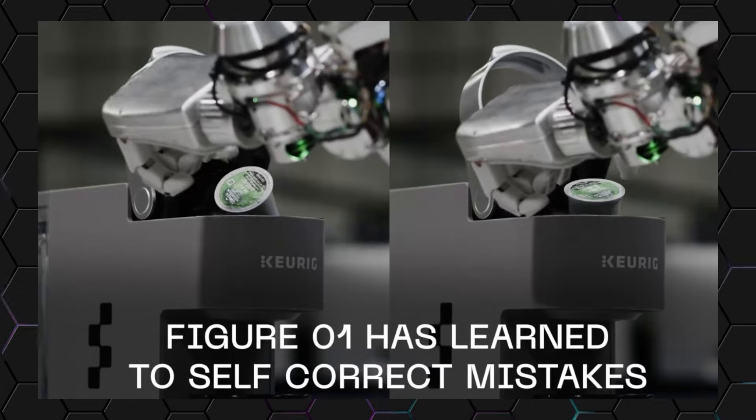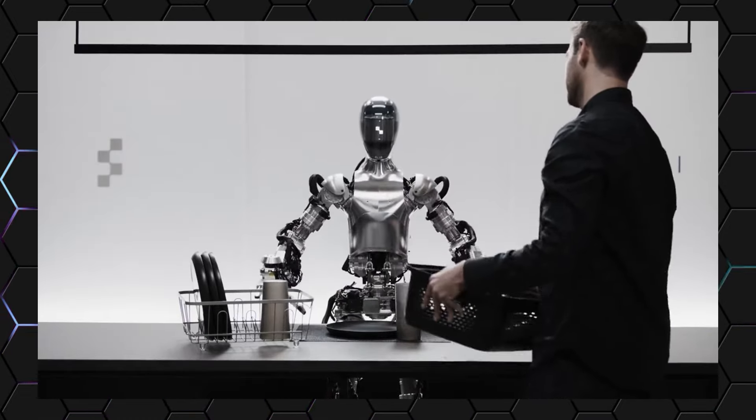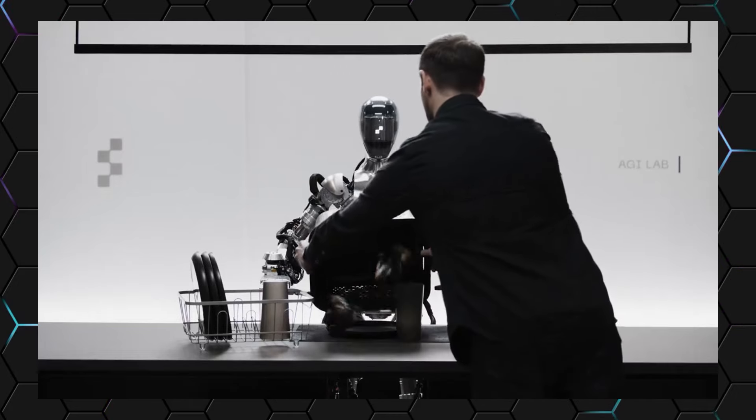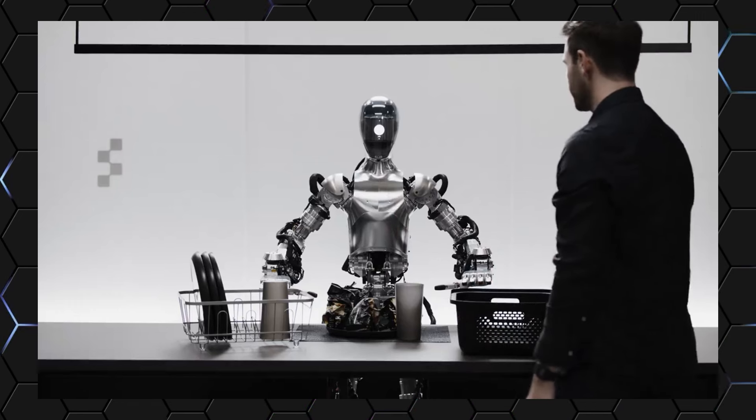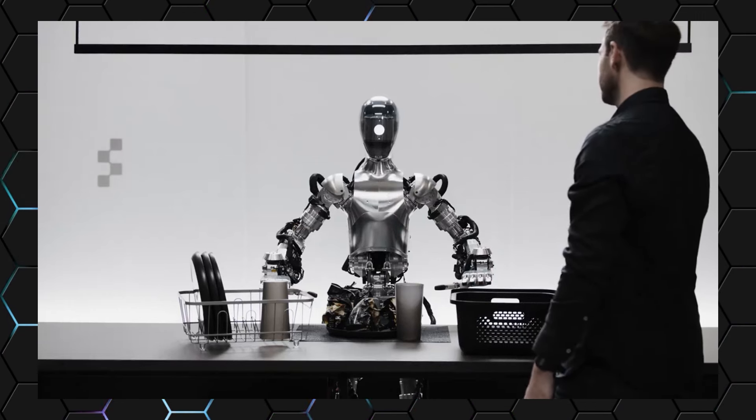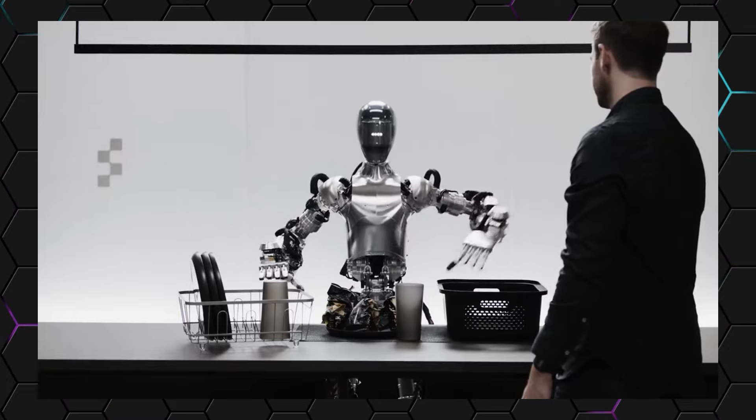Could this be our step forward to AGI as mentioned earlier? And then fast forward to a few months after that, the robot has reached the state in which we could see in the demo. Walking at around 16.7% of human walking pace and doing all of those amazing things that we saw in the demo. We can only wonder how far this robot will go and where Figure AI will take things from here.